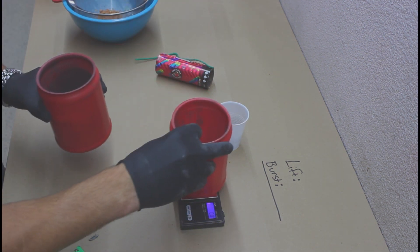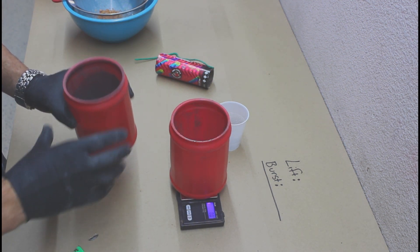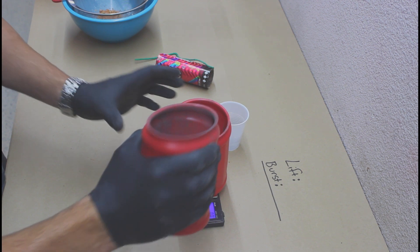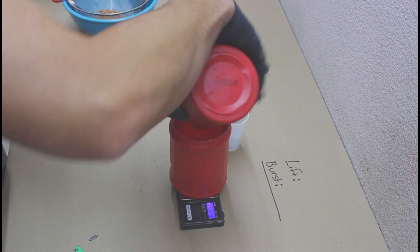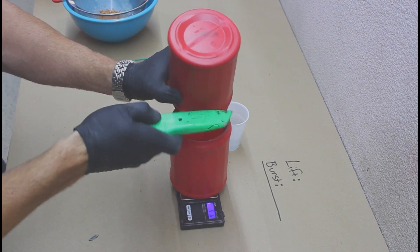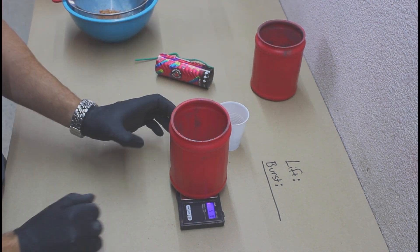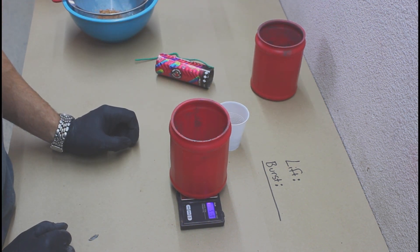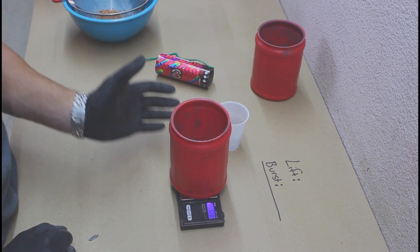Tare didn't work. All right, let's do that again. Turn that off. There we go. So we're looking at 51.9 grams of burst and stars crackling effect inside this shell - 52.